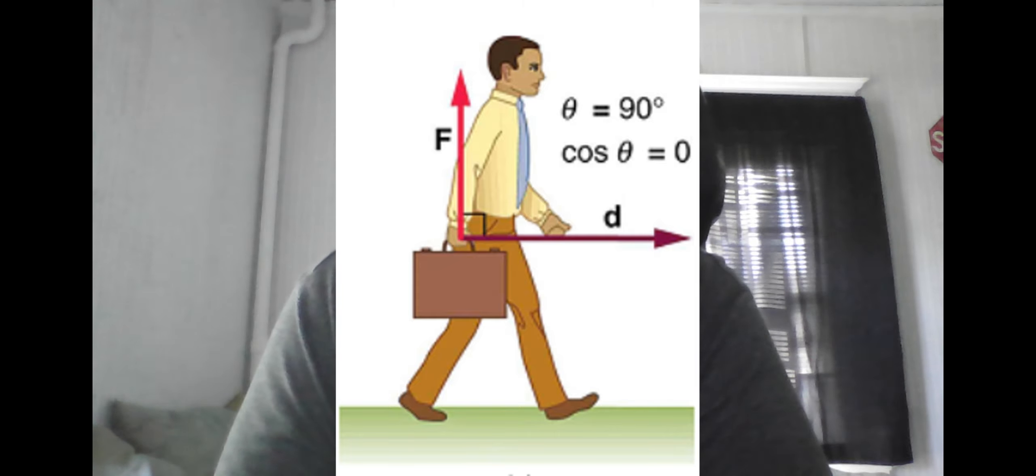in particular, the force of the tendons and muscles acting on one another inside the arm. But the overall system of the arm and briefcase does have a work of zero, as that is what we were focusing on for the purposes of the problem.